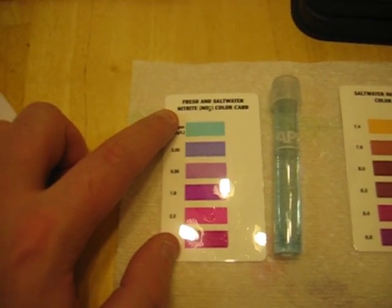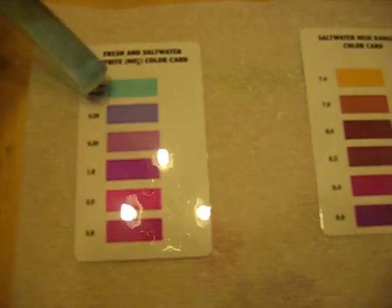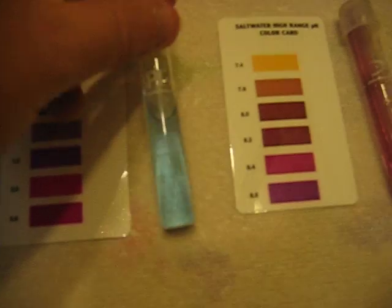So anyway, we have the nitrite right here. Pretty much looks like the top blue, which is zero parts per million.